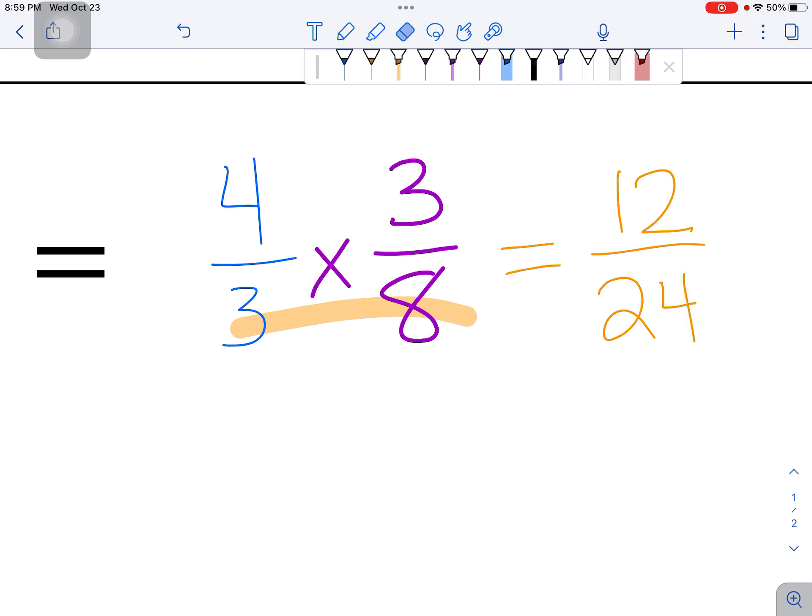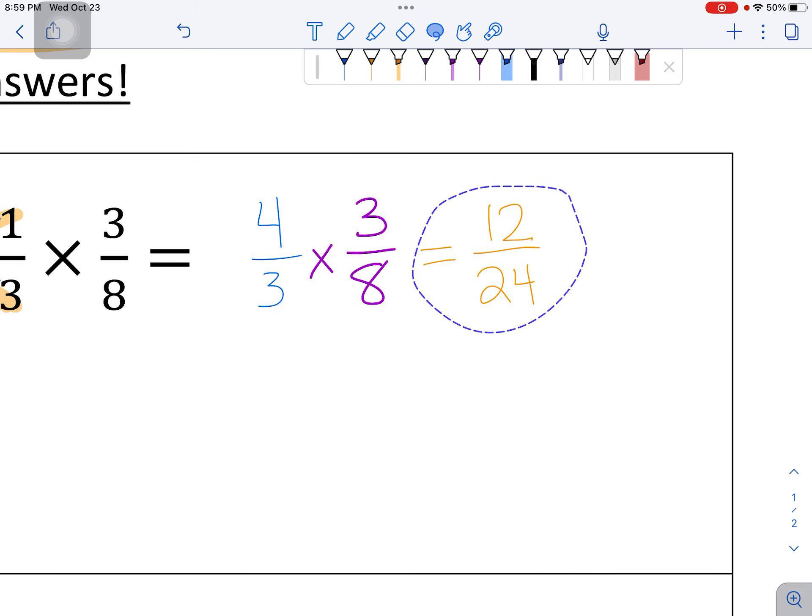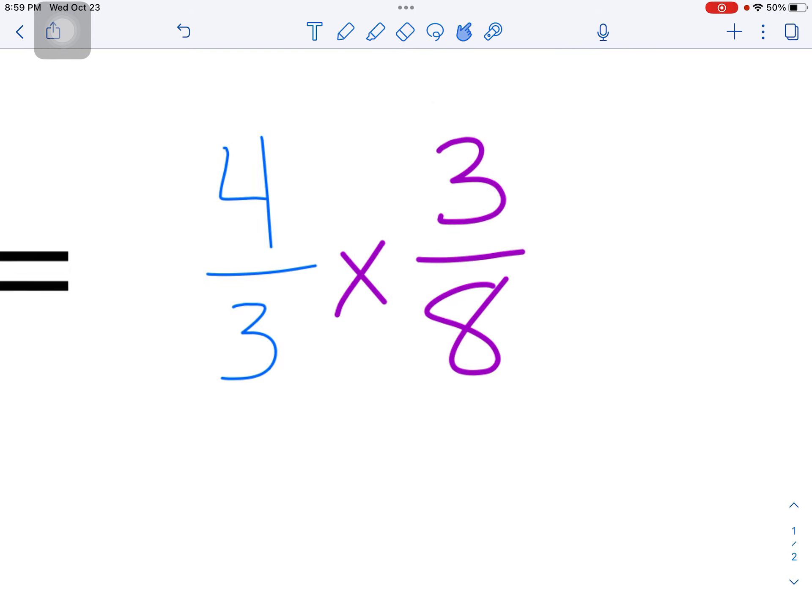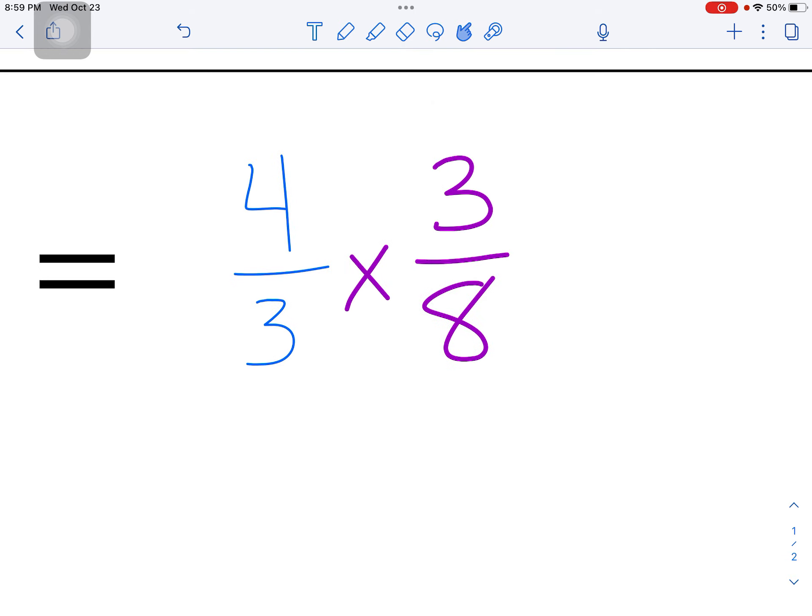Or we could solve this a slightly different way. I'm going to move this 12 24ths over to the side, so you can still see it there. Instead, what I'm going to do is I'm going to look for a numerator and denominator with a common factor. They have a common factor of 3.